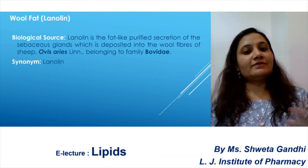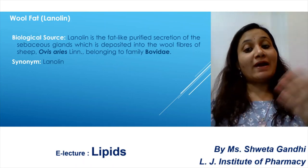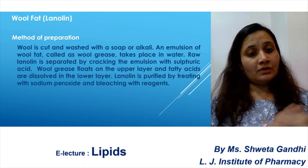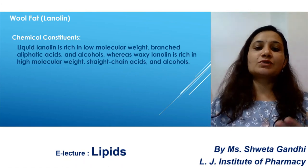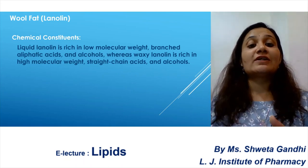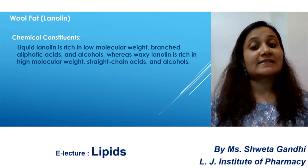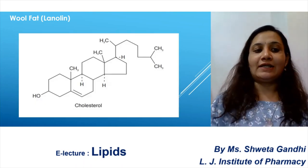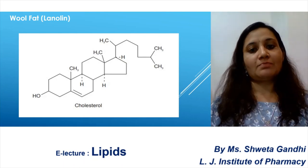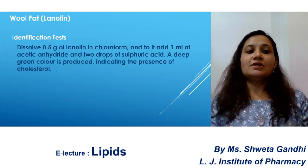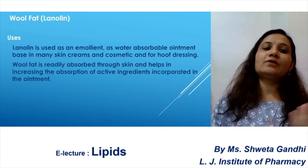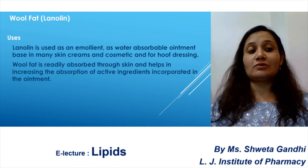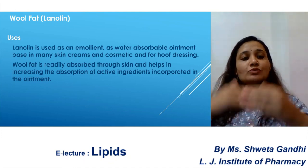Next is wool fat, also called lanolin. Study its biological source, how it is obtained, morphology, preparation, and chemical constituents. Wool fat contains lanolin, which is rich in low molecular weight aliphatic acids and alcohols. The chief constituents are cholesterol and isocholesterol. The structure of cholesterol is the main constituent structure to know. Identification tests for wool fat or lanolin are studied, and lanolin is used as an absorbent and emollient.